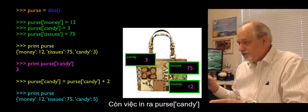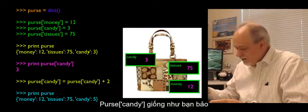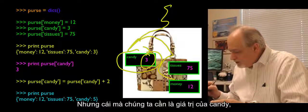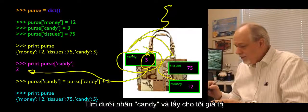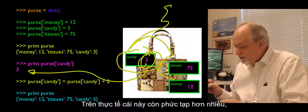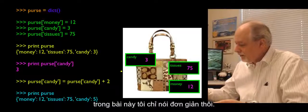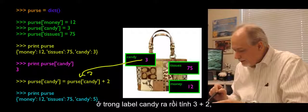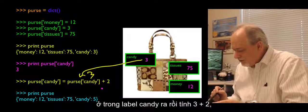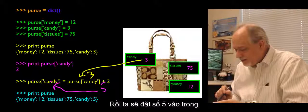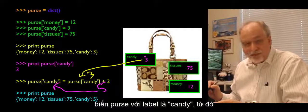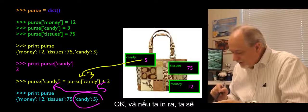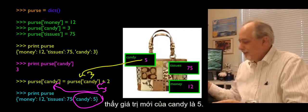When we print purse sub candy, it's like asking the purse: go find the candy thing. What we're looking for is the value, so 3 comes out. When we say purse sub candy equals purse sub candy plus 2, it pulls the 3 out, adds 3 plus 2 to get 5, and assigns it back in with the label 'candy,' which replaces the 3 with a 5. When we print it out, we see that the candy entry is now 5.